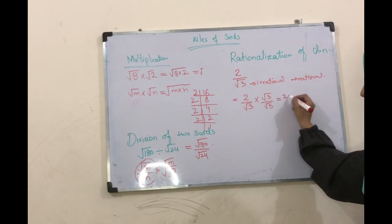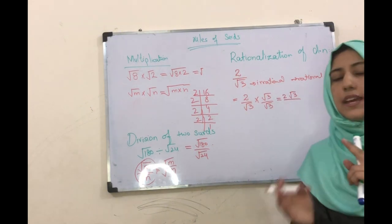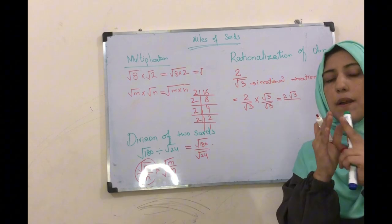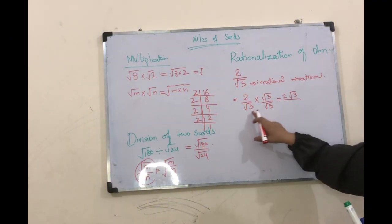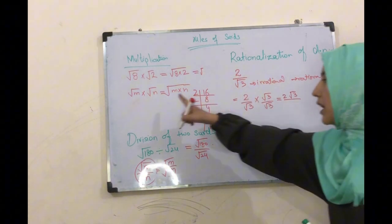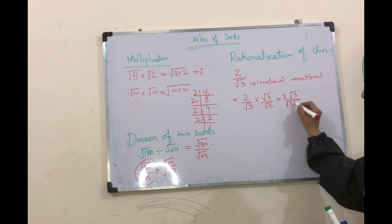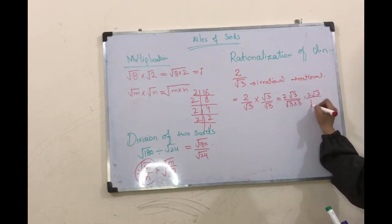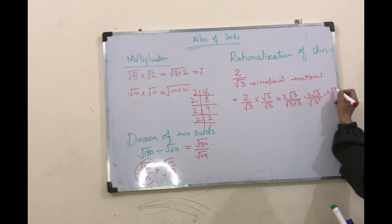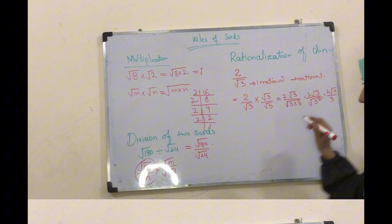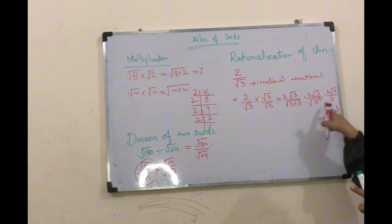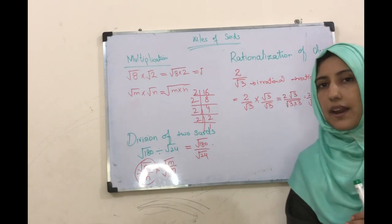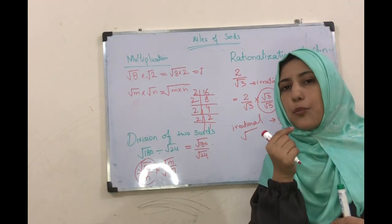2√3 اس کو ہم solve نہیں کر سکتے کیونکہ 2 square root سے باہر ہے اور √3 ایک الگ irrational number ہے۔ یہ √3 × √3 - اس rule کو apply کرنے کے ساتھ یہ ہوگا: 3×3 = 3². اس کو مزید solve کریں تو یہاں آجے گا 3۔ تو یہاں ہمارے پاس denominator میں ایک rational number آگیا۔